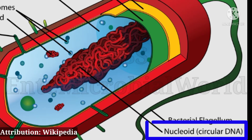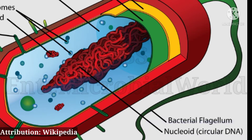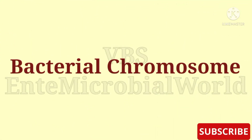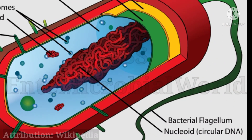The nucleoid contains one or two circular or linear chromosomes, along with several proteins and RNA molecules. Next, we are going to see what is a bacterial chromosome. The bacterial chromosome consists of a super-coiled double-stranded molecule of DNA arranged in a circular form.